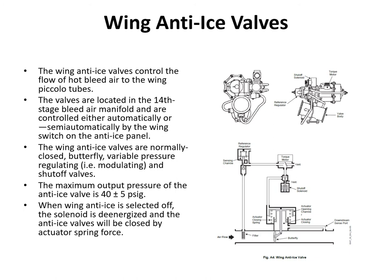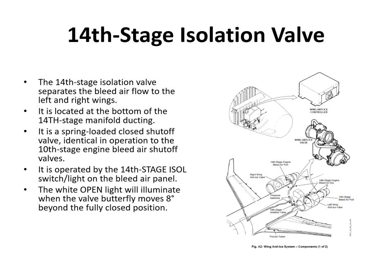The wing anti-ice valves are normally closed - when the solenoid is de-energized they close; when energized open, air pressure operates a diaphragm to open the valve. Maximum output pressure is around 40 psi. When the wing anti-ice is selected off, the solenoid is de-energized and the valves close by actuator spring force. We have a 14th stage isolation valve acting like a cross-bleed valve, separating left and right sides. Opening it allows the two sides to be joined together, and it's identical to the 10th stage isolation valve.